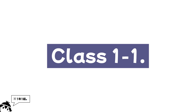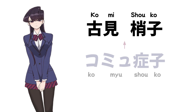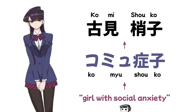Komi's full name is Komi Shouko — last name first, first name last — which is very fitting because it sounds almost exactly like the phrase 'Komi Shouko,' which means 'girl with social anxiety.' 'Komi Shou' literally means 'communication disorder,' and 'Ko' simply means 'child' or 'girl.'